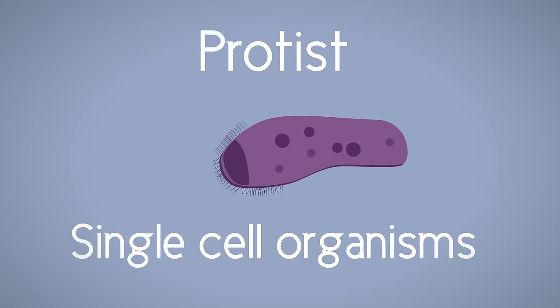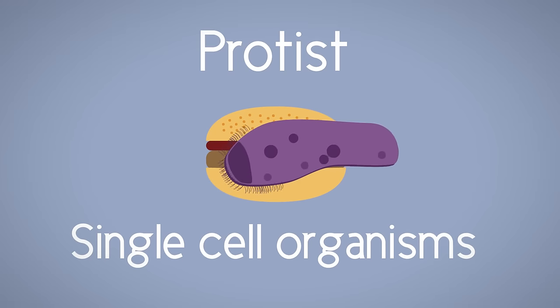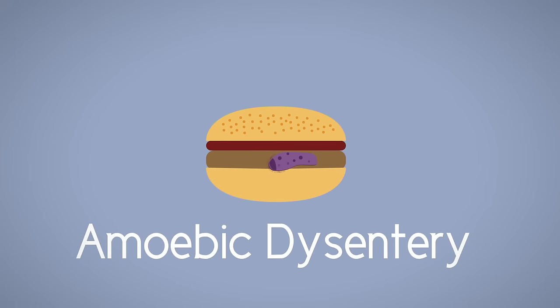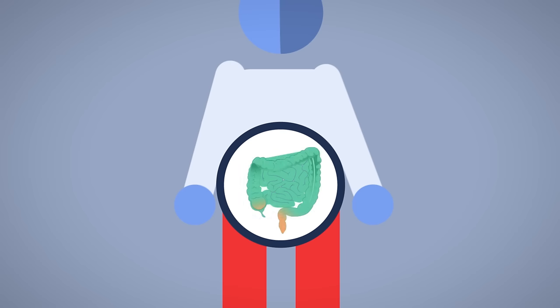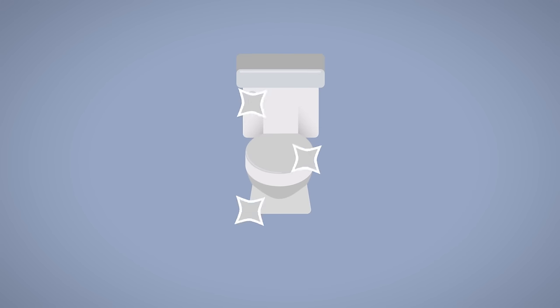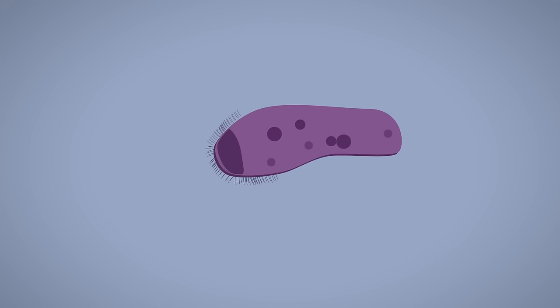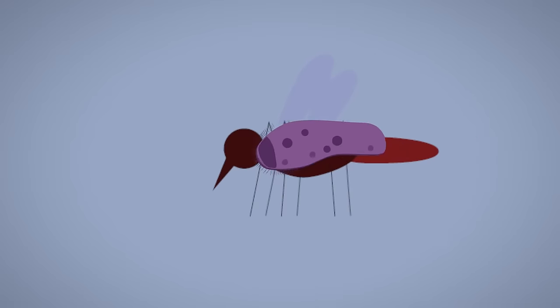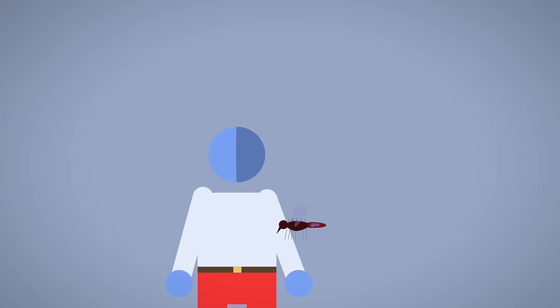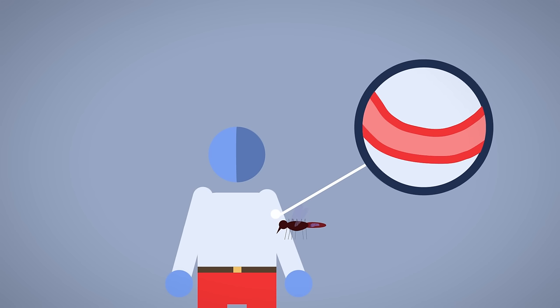Protists are single-cell organisms. Some protists can contaminate food and cause amoebic dysentery, which is an intestinal infection and results in severe diarrhea. Protist pathogens can also be parasitic—they live in or on other organisms and cause harm. Malaria is an example of a protist pathogen that lives in the blood and is transmitted by mosquitoes.